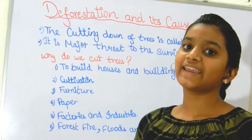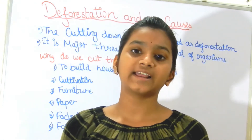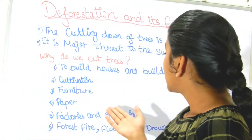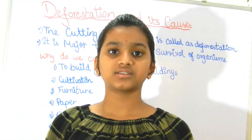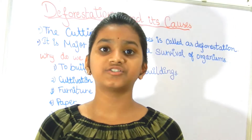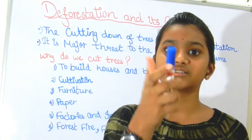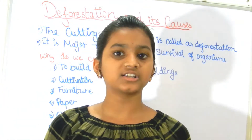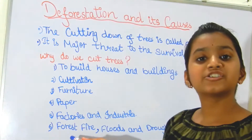Paper — in the introduction video we discussed the recycling of paper. We cut trees for paper as well. Factories and industries are also a main reason we cut trees. To produce new things like whiteboards and markers, and to build those factories, we cut trees.